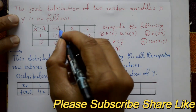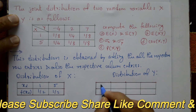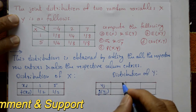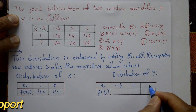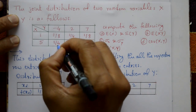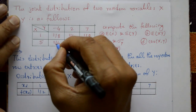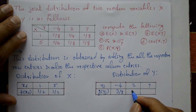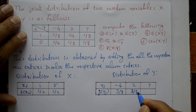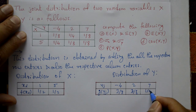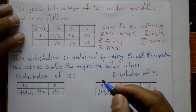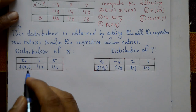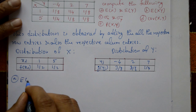For the marginal distribution of Y, Y takes values minus 4, 2, and 7. Summing column-wise: first column gives 1/8 + 1/4 = 3/8, second column gives 3/8, and third column gives 1/4. So g(y): Y = −4 with probability 3/8, Y = 2 with probability 3/8, Y = 7 with probability 1/4. This is called the marginal distribution.